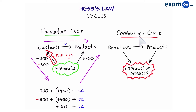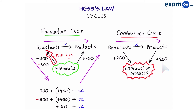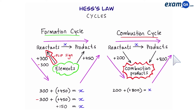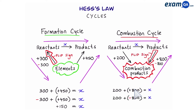Moving on to the next cycle — the combustion cycle. In the combustion cycle, we point arrows down from both the reactant side and the product side to the combustion products. Hess's law says: to go from reactants to products, we can go down from the reactants and then back up from the combustion products. Again, one of our arrows is not pointing the right way, so we flip that sign and then add them together, giving us the energy change for the reaction above. In summary: in a combustion cycle we point down, flip the right arrow, then add them together.